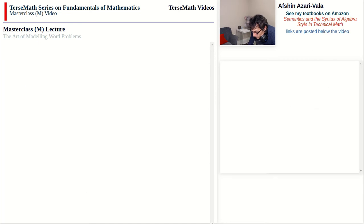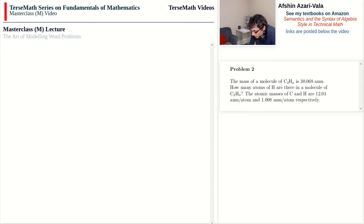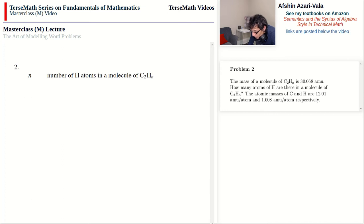Problem 2: the mass of a molecule of C₂Hₙ is 30.068 amu. This time we know the atom is H but not how many. Atomic masses of C and H are 12.01 and 1.008 amu per atom respectively. With n being the number of H atoms: 30.068 = 2(12.01) + n(1.008). Same logic — total mass equals mass of two carbons plus mass of n hydrogen atoms.